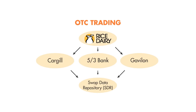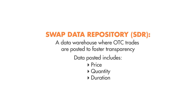The biggest change — and it's really a good change — is that all transactions are required to be posted on a Swap Data Repository, or SDR, on a daily basis. This has really enhanced the transparency of the OTC market that was never there before. An SDR is like a data warehouse or bulletin board where OTC trades are posted to foster transparency.